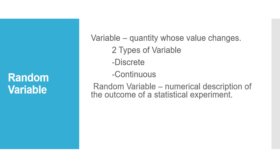Now, let's define random variable. A random variable is a numerical description of the outcome of a statistical experiment. It is a variable which results from a random experiment in statistics and other experiments such as scientific experiments.